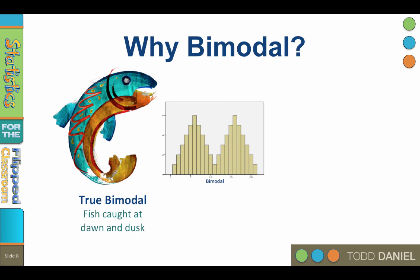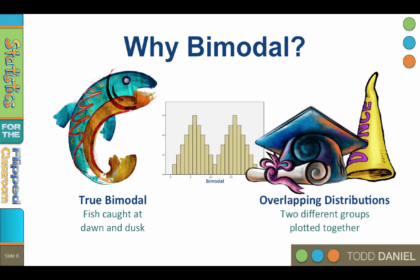The second time you see a bimodal distribution is when there are actually two distributions overlapping each other. If we compare average IQ scores from a state university and a community college and find a bimodal distribution, we might want to split our data by school to see if we are really dealing with two distinct distributions of scores. Because they are two different groups, you should separate them before analyzing the data set.